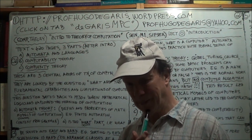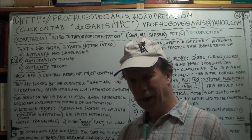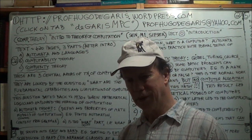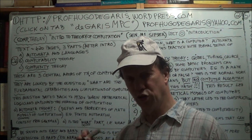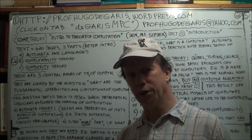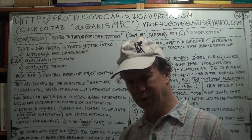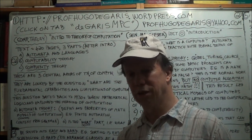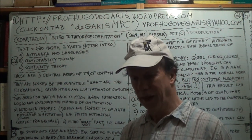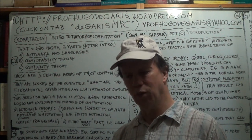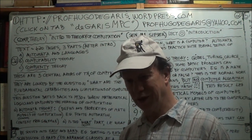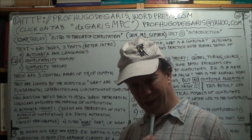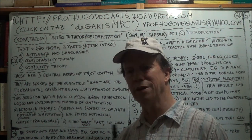Gödel was interested in the foundations of mathematics. One of his famous proofs was that given a set of axioms in a branch of math, there will be statements you consider to be true but cannot prove follow from those axioms. In a sense, those axioms are incomplete. If you add more axioms to deduce that statement, there will still be other statements that remain unprovable from the new augmented set of axioms. That was Gödel's famous incompleteness theorem, from the early 1930s.